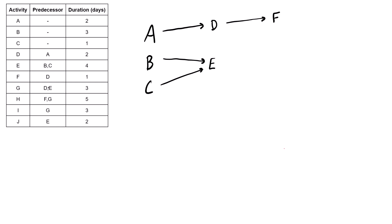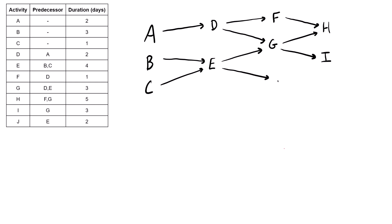Activity G depends on D and E, so we have an arrow coming from D and an arrow coming from E. Activity H depends on F and G, so F and G both lead into H — we draw an arrow coming out of each going to activity H. Activity I depends only on G, so we draw a single arrow out to activity I. Activity J is the final one; it depends only on activity E, so we draw it for activity J.